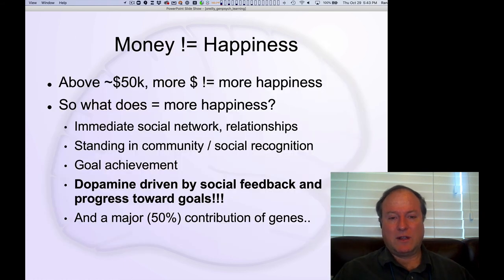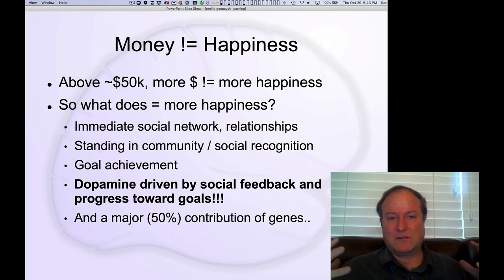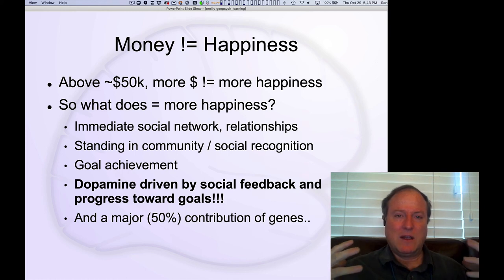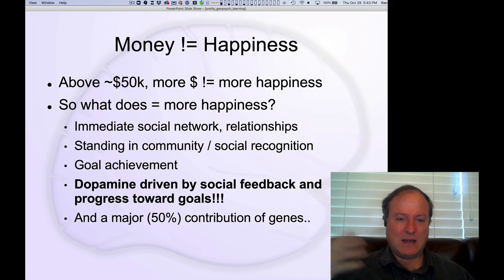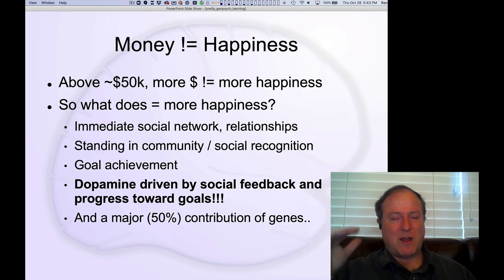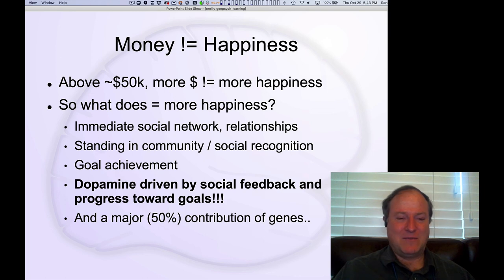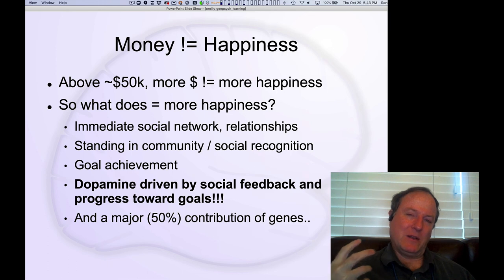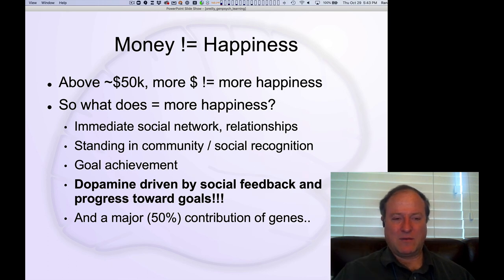Things more strongly correlated with life happiness include your social network — the ability to connect with others, having a real sense of belonging in your personal world and relationships. Standing in the broader community, social recognition, and essentially your rank in the social dominance hierarchy are also important factors, along with self-efficacy and the ability to achieve your goals.